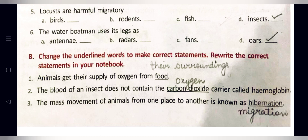Statement three: The mass movement of animals from one place to another is known as hibernation. That is wrong — it is called migration. Correct statement: The mass movement of animals from one place to another is known as migration.